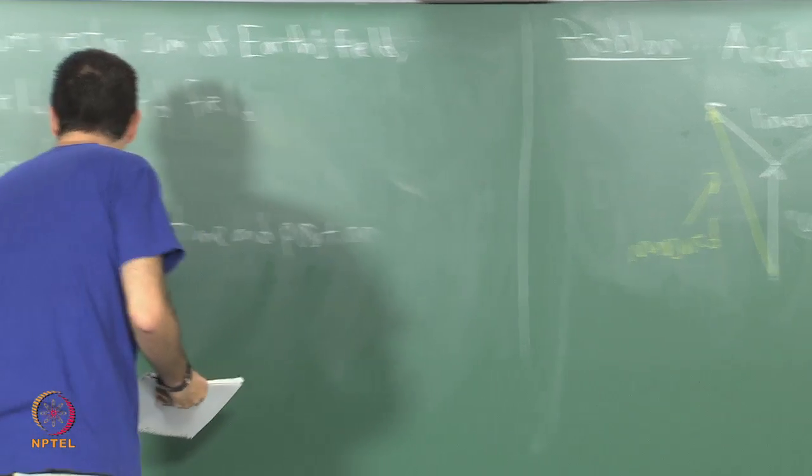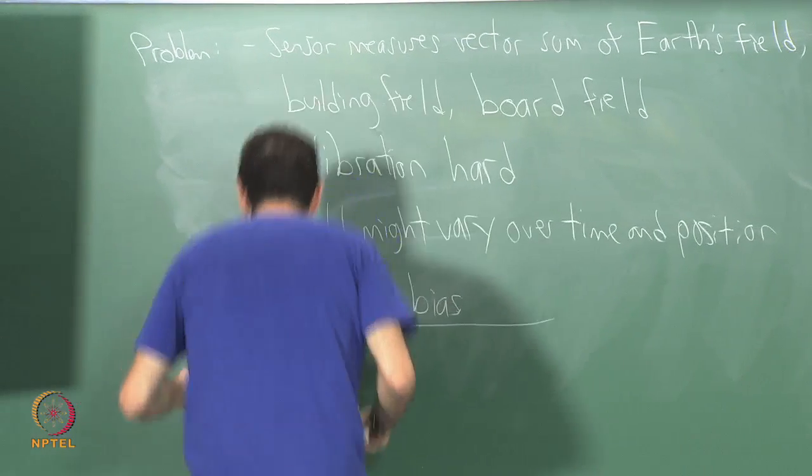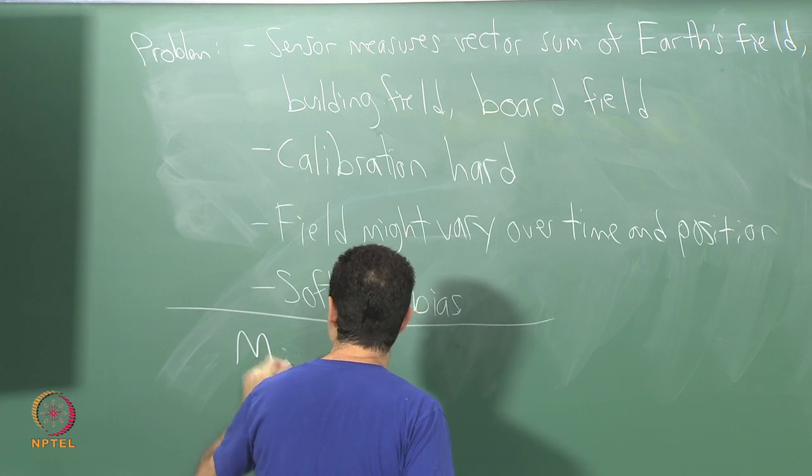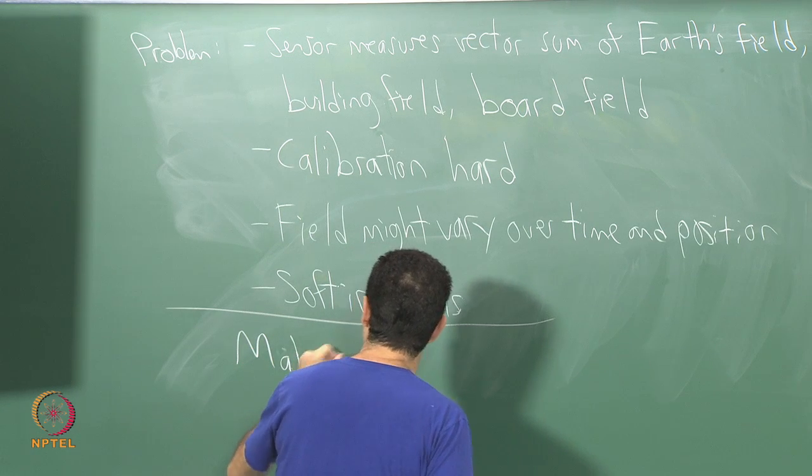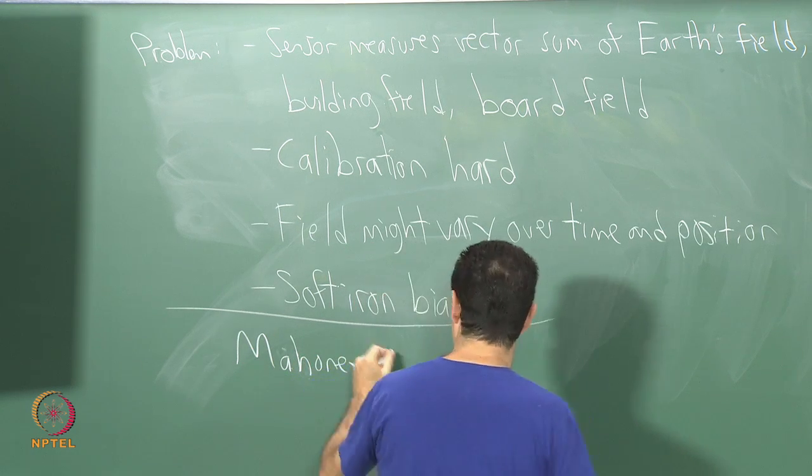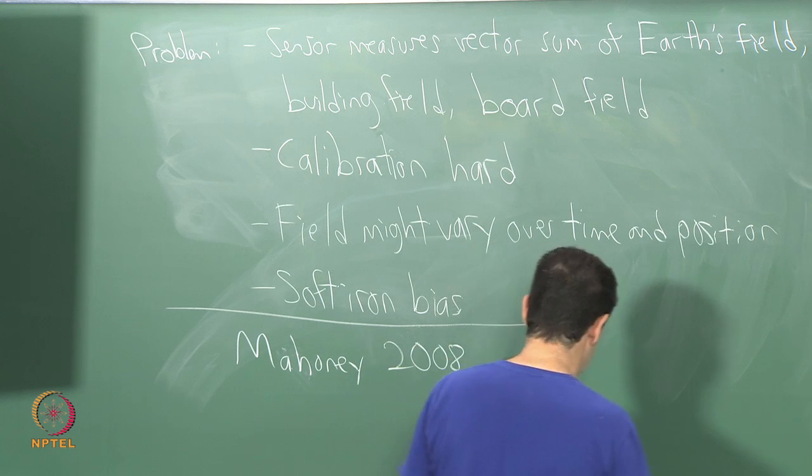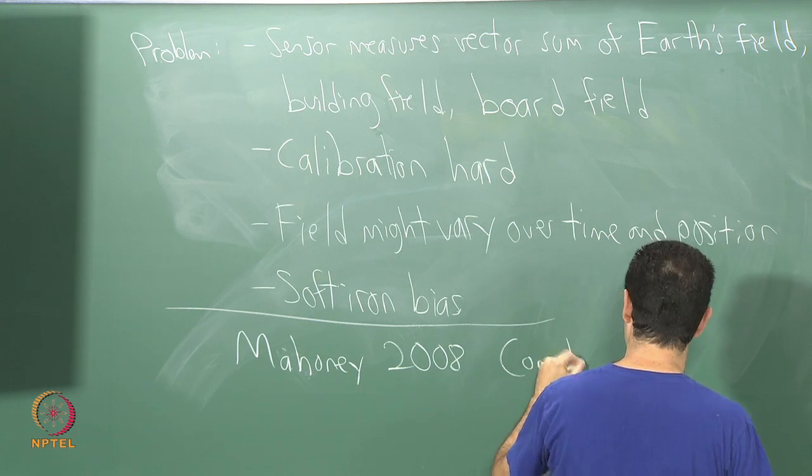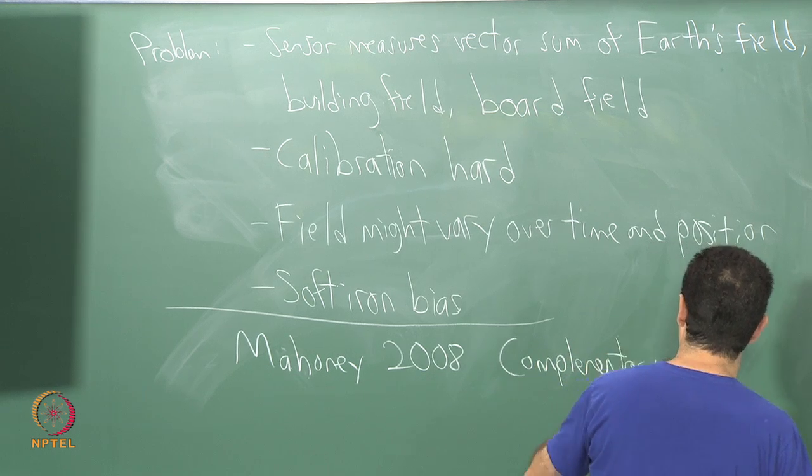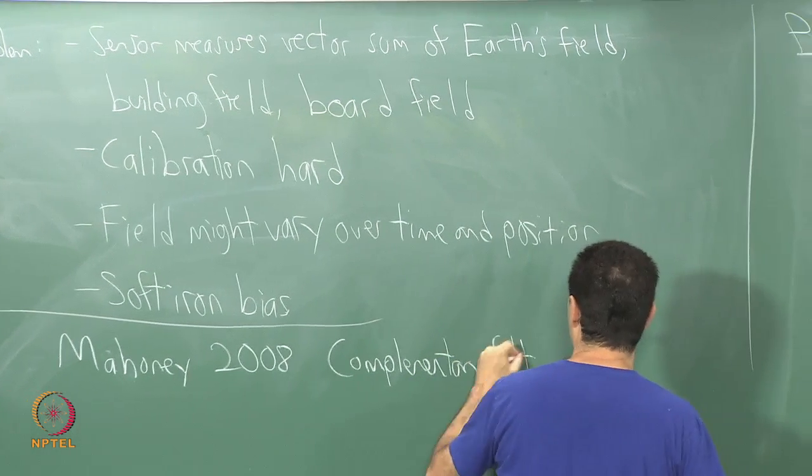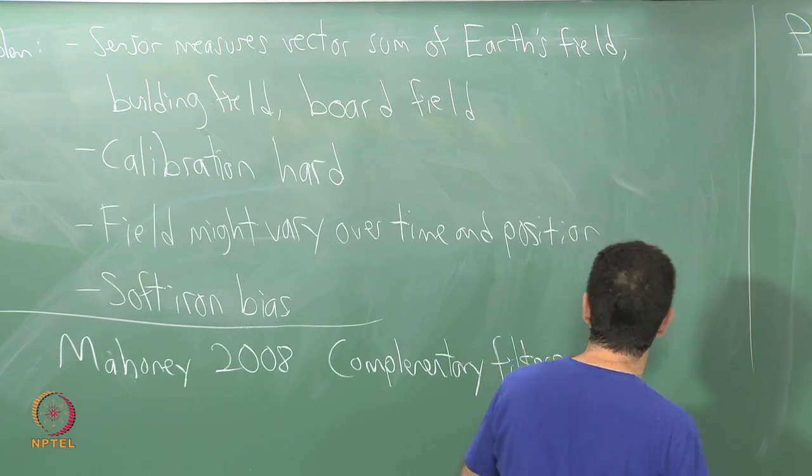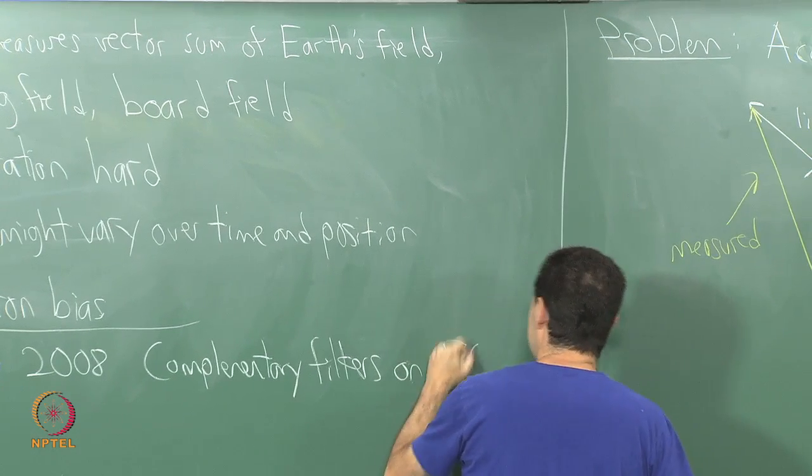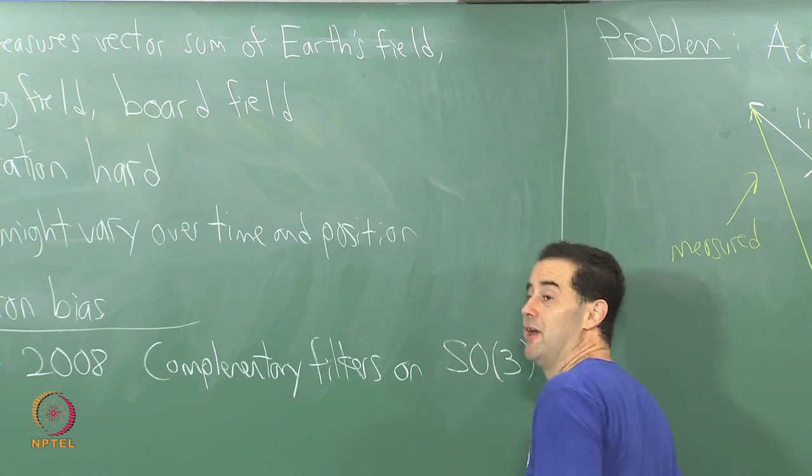If you want to read more on these things I have talked about here, there is a paper by Mahoney, 2008, and it is all about complementary filters on the space of transformations that arise for rigid bodies, like SO(3), which is the space of 3D rotation.